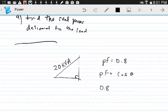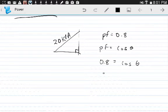We have 20 kVA and a power factor of 0.8. The power factor equals cosine of the angle, so 0.8 equals cosine of the angle. Solving for the angle, we have cosine inverse of 0.8.